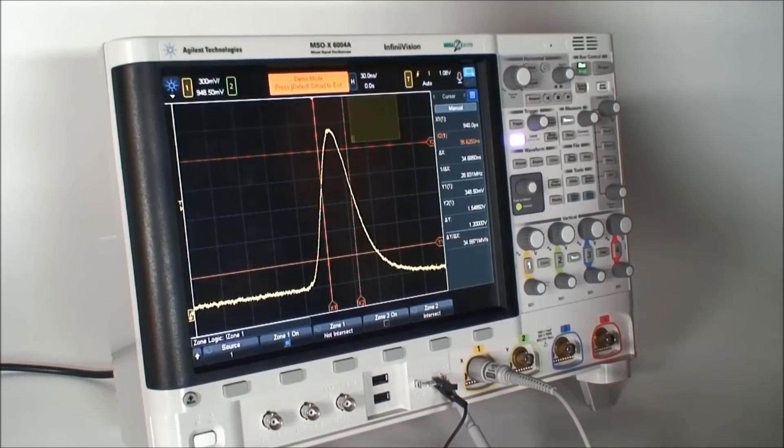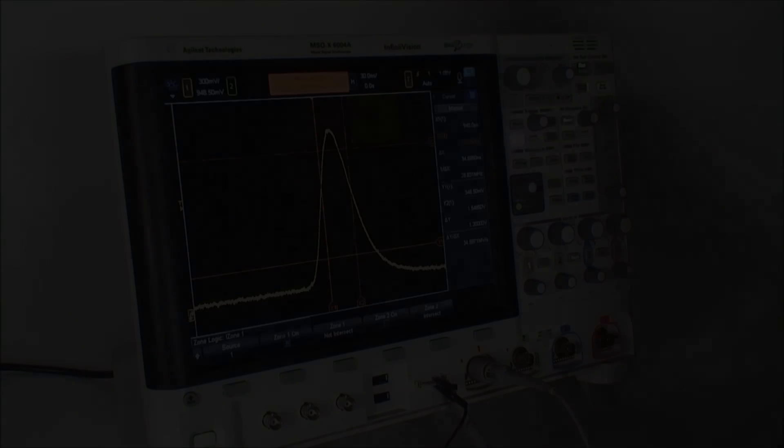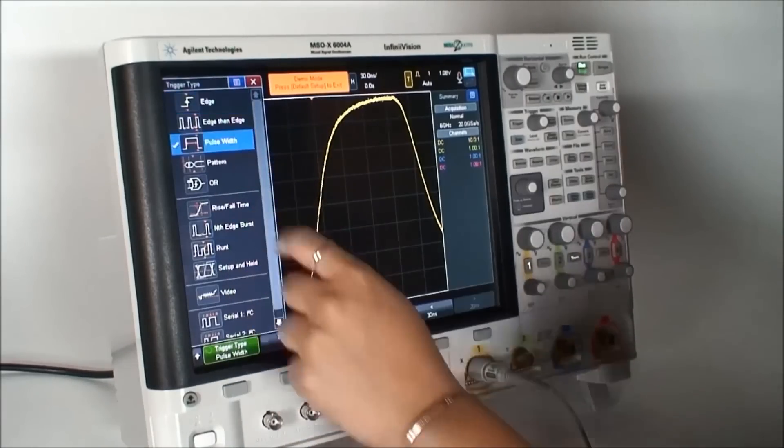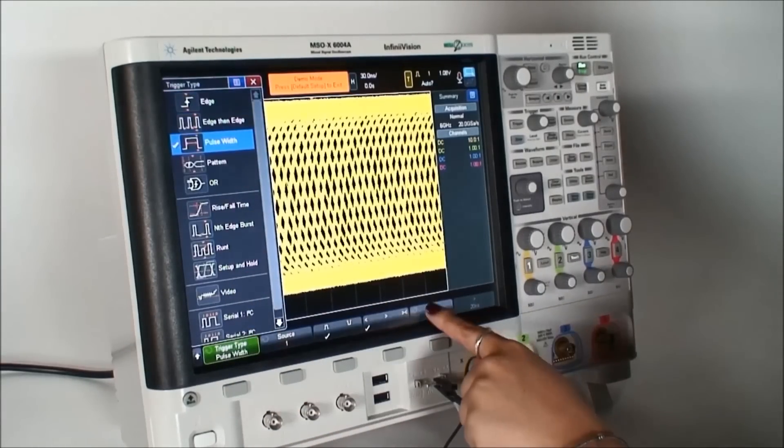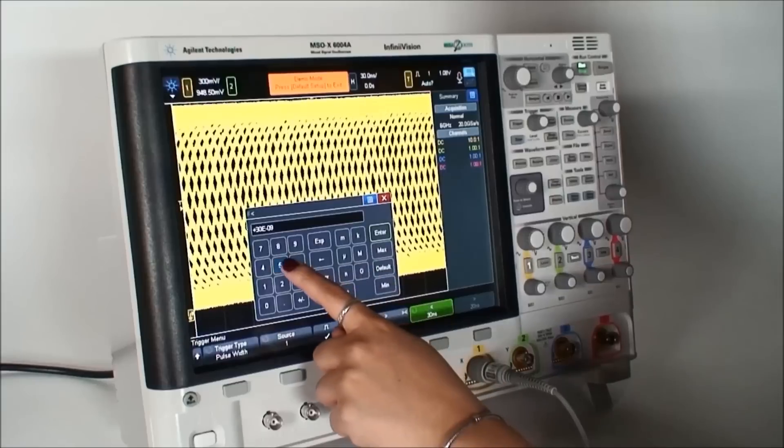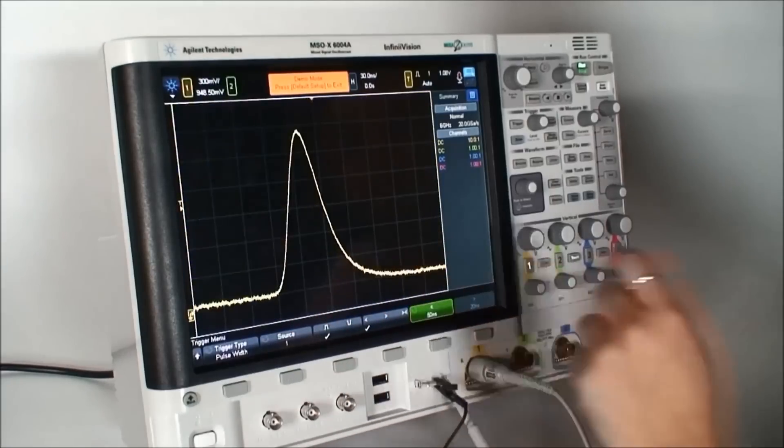Let's look at another way to isolate this glitch. In addition to InfiniScan zone triggering, the 6000x series also has traditional advanced triggers. Since we just determined the width of the pulse, we can also use a pulse width trigger to isolate it. If we set the scope to trigger on positive pulses less than 50 nanoseconds, we can again successfully isolate the glitch.